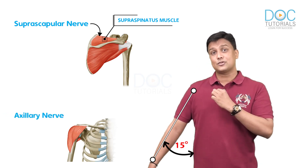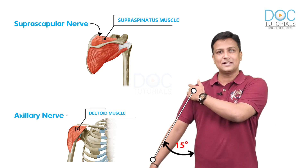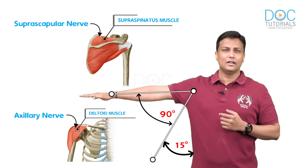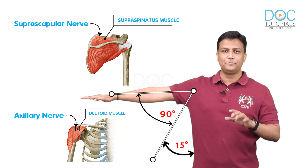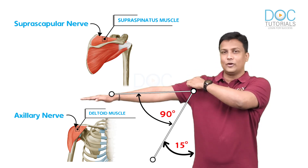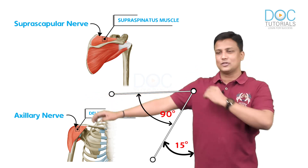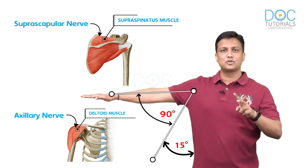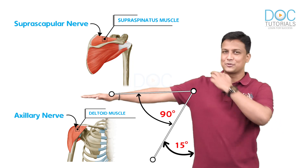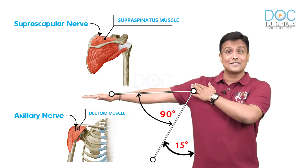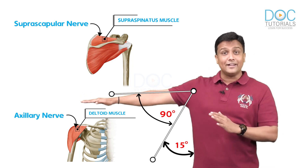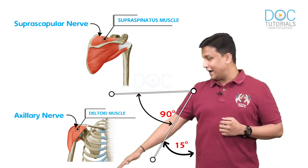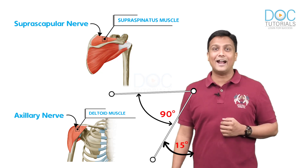The axillary nerve supplies the deltoid muscle, which helps in 15 to 90 degrees of abduction of the arm. So the supraspinatus and deltoid muscles together are responsible for abduction of the arm. In Erb's Paralysis, both the suprascapular nerve and the axillary nerve are gone, so the person is unable to abduct the arm — the arm will be in an adducted position.